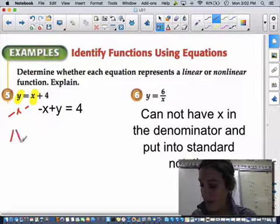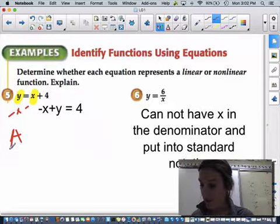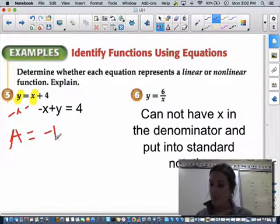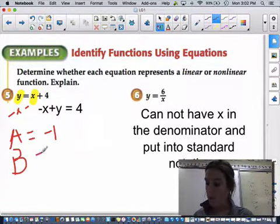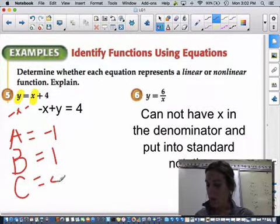And if we identify our A, A is the value in front of X because AX plus BY equals C. My A value, the number in front of X, is negative 1 because it says negative. My B value is the number in front of Y. It's a positive, so therefore it's a positive 1. Even though we don't see the number there, it's just understood that it's 1. And then my C value, because it equals 4, is 4.